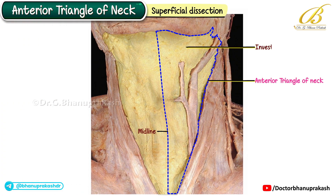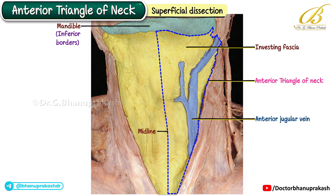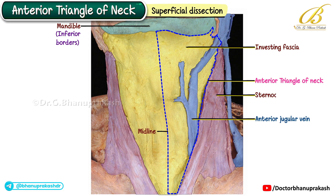We can see the investing fascia covering the submandibular gland and attached to the inferior border of the mandible. The anterior jugular vein is visible as it pierces the investing cervical fascia, joins with the communicating vein, and then descends beneath the sternocleidomastoid muscle.